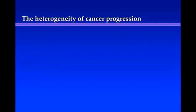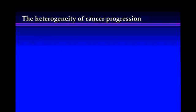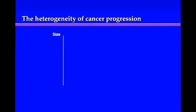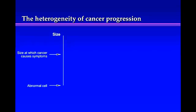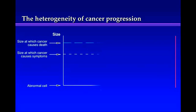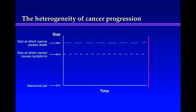To think about cancer over-diagnosis, it's important to understand the heterogeneity of cancer progression. I want to share that with you with a simple picture. On the y-axis I'm going to put size — the size of the cancer. At the bottom is when cancer starts; we'll say it starts with an abnormal cell. It gets big enough that it actually leads to symptoms, and then large enough that the cancer will actually cause death. Now we need another dimension — time — which is bounded by the red line, the point at which people die from other causes.